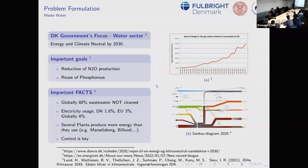We actually have a few plants that produce more energy than they use. This was identified by a water organization in Denmark — improved control can improve this further. What I'm showing here is that in October 2021, 25% of natural gas usage in the country was from biogas — a quarter of all the gas.